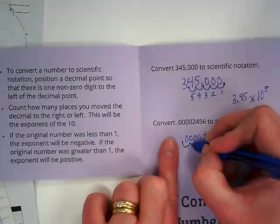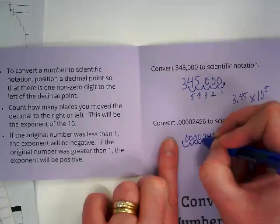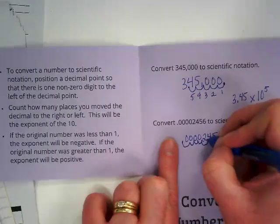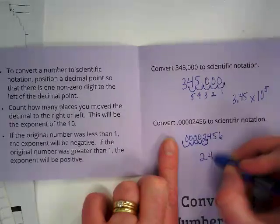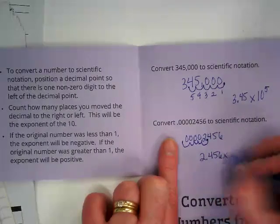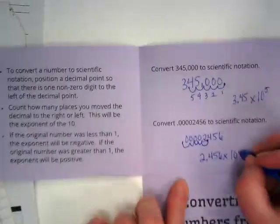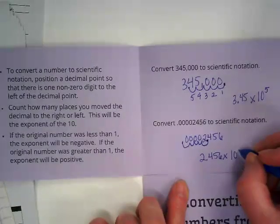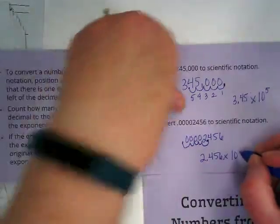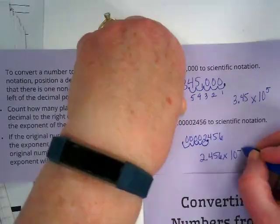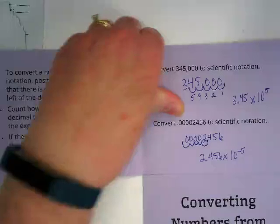So we're going to move this 1, 2, 3, 4, 5. And how many times did we move it again? 5. But the original number was less than one, so we're going to put our negative 5 exponent.